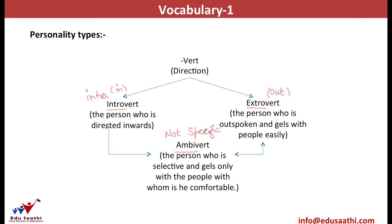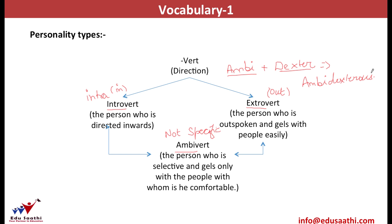Ambi may be used in many different words, such as ambidextrous. Ambi, as I said, is not specific, and dexter is the term used for the right hand. Thus, ambidextrous is any person who has no specific right hand, which means he can work equally efficiently with both his hands. For example, Leonardo da Vinci, the famous painter, was ambidextrous — he could paint and write equally well with both his hands.